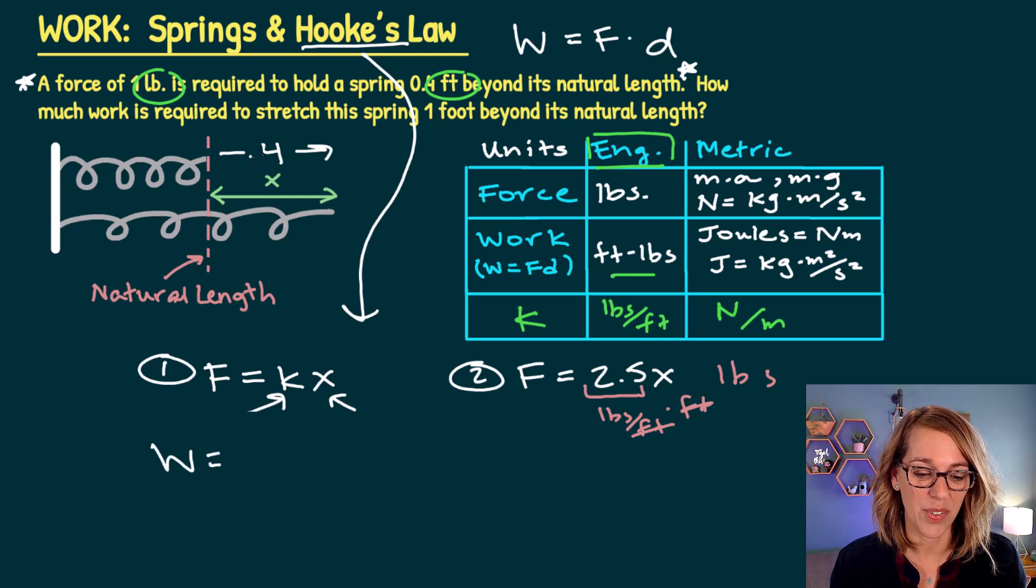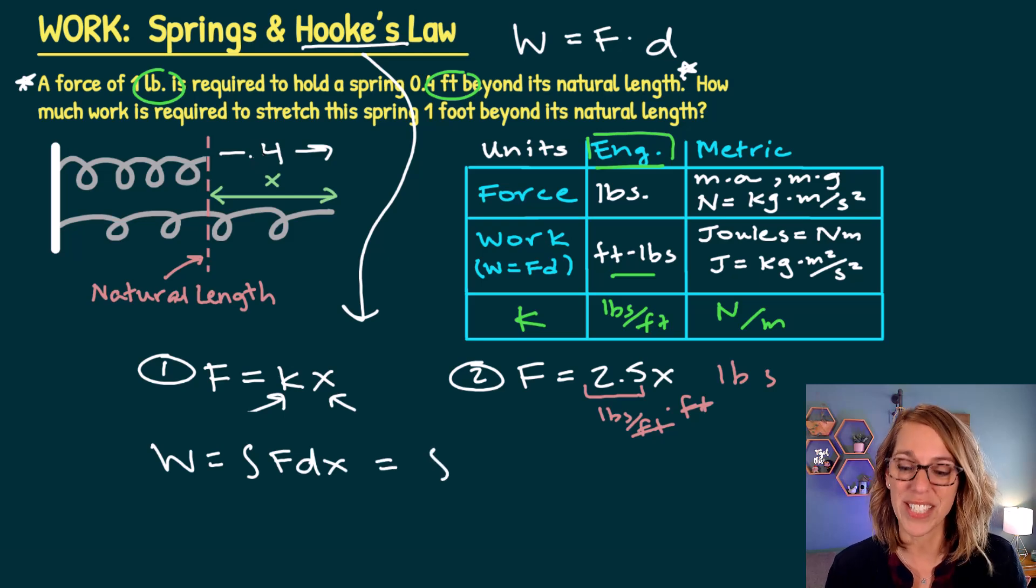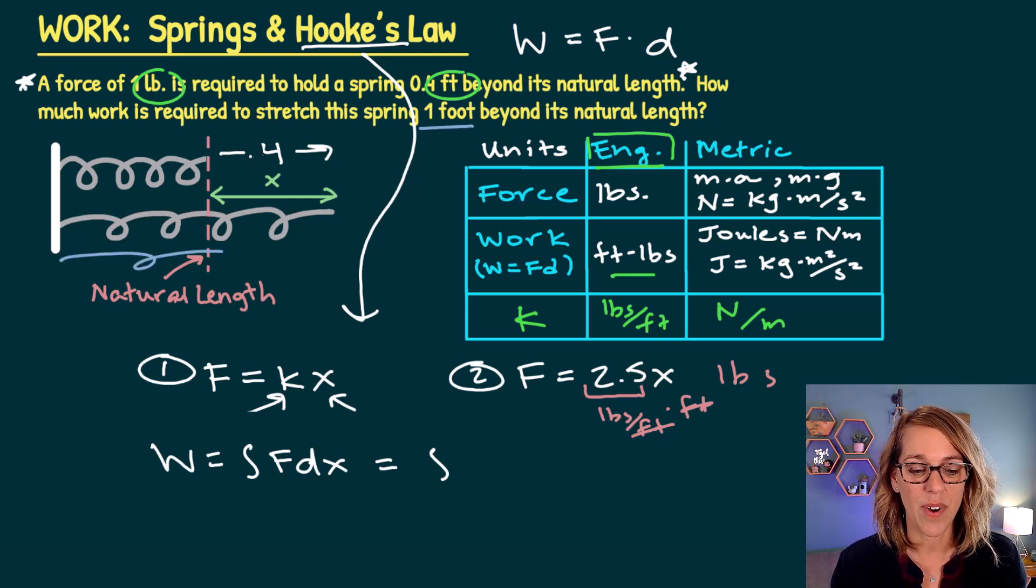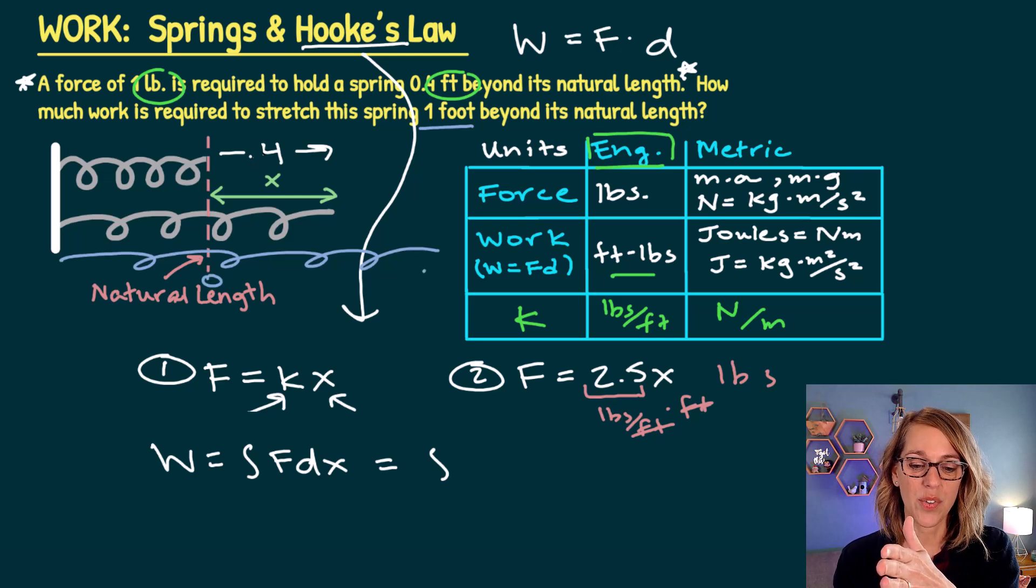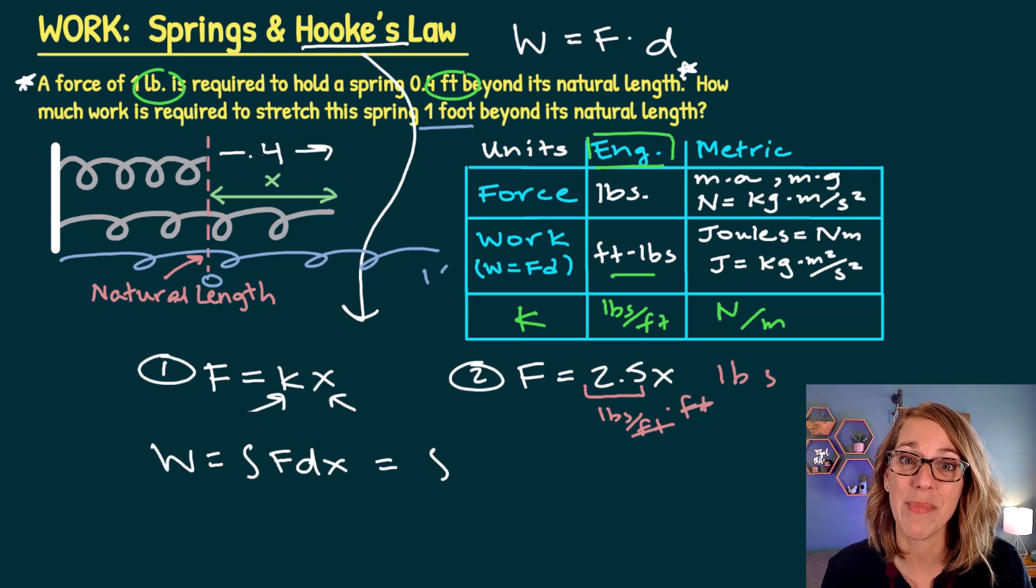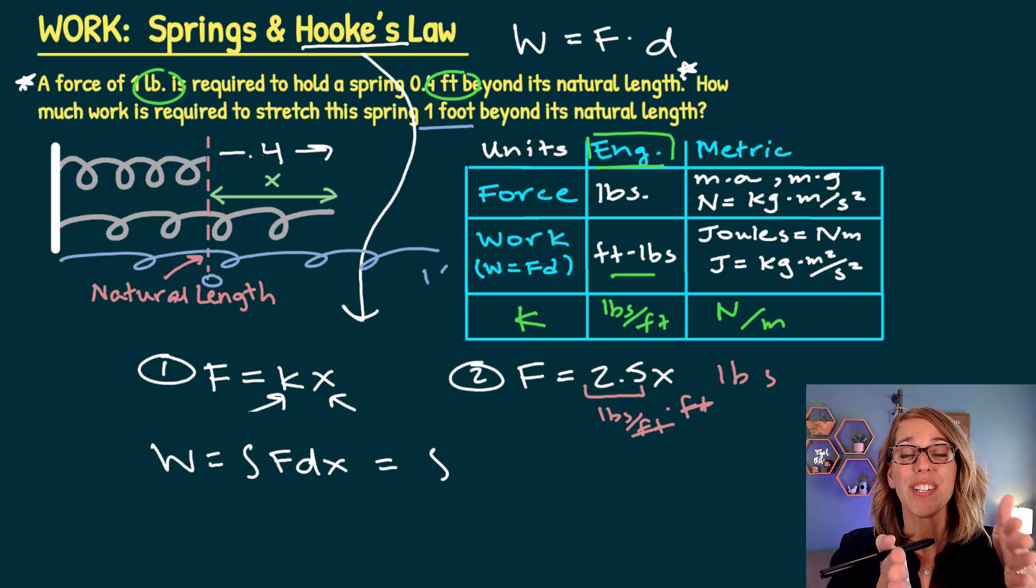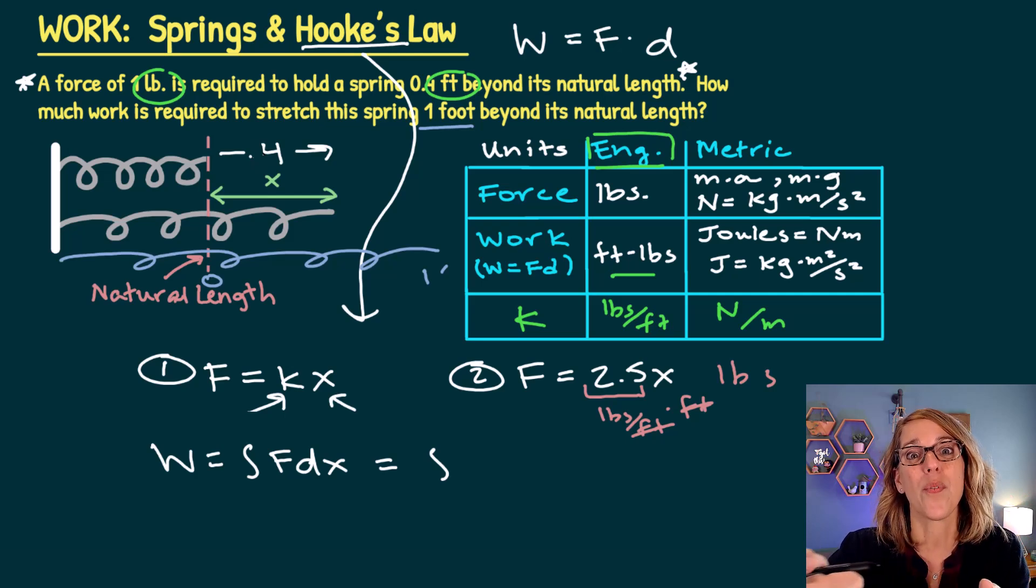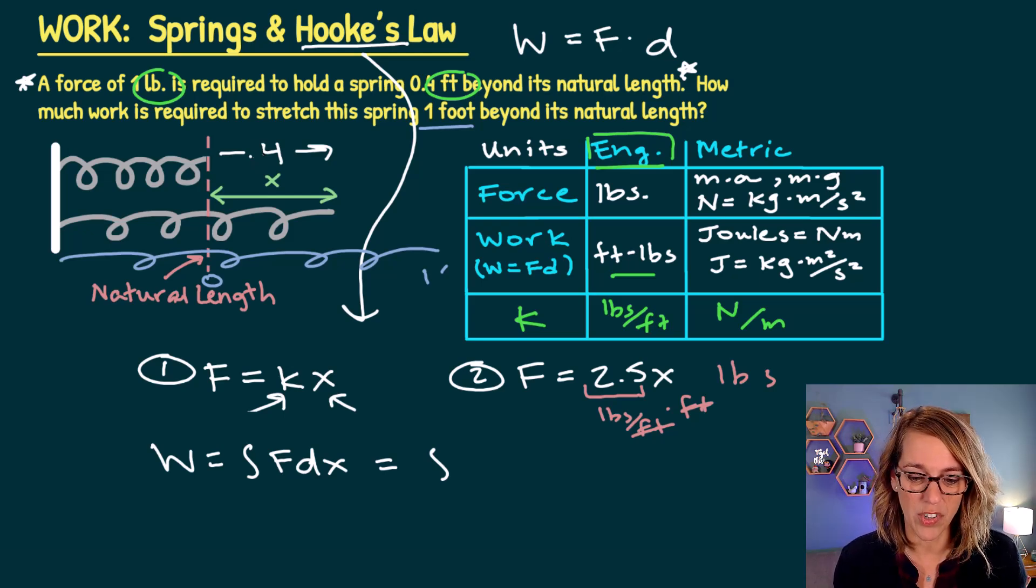So work is equal to the integral of force times dx, which is equal to let's figure out those limits of integration. I am now stretching that spring one foot beyond the natural length. So as I write this spring here stretched one foot beyond, I am going from zero to one foot. Those are my limits of integration. As I'm stretching along there, my force needed is going to change. The further away I am from the natural length, the harder I'm going to need to pull on the string. So my limits of integration is directly related to the distance stretched. So I've got zero to one. My force is 2.5x and then I've got my dx.